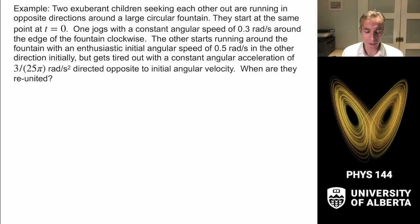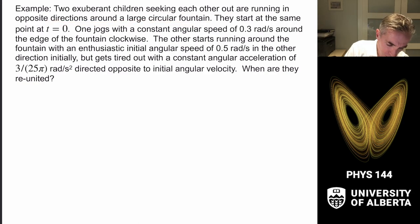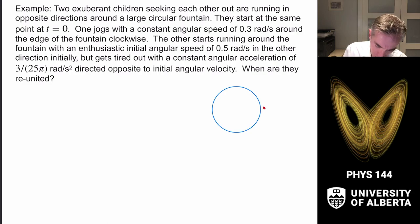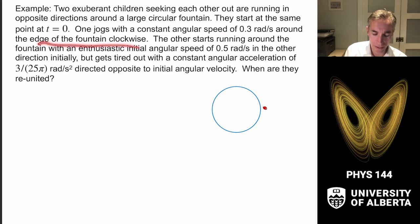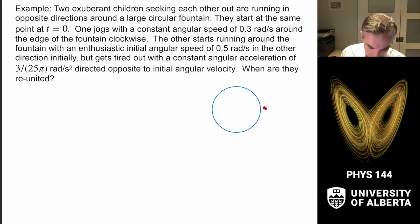We can also do some kinematic equations that bring up an important fact about circles. We have two exuberant children seeking each other out, running in opposite directions around a large circular fountain. One child runs clockwise at 0.3 radians per second. The other starts counterclockwise with an initial angular speed of 0.5 radians per second but gets tired with an acceleration of 3 over 25 pi radians per second squared opposite to the initial angular velocity. When are they reunited?